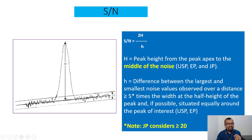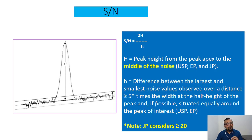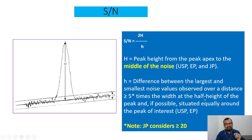If you look at the cursor, you will understand the middle of the baseline. This is the end of the baseline, but this is the middle of the baseline. What is small h? Small h is the difference between the largest and smallest noise values observed over a distance equal to or greater than five times the width at half height of the peak, and if possible situated equally around the peak of interest. USP and EP say equal to or greater than five, and JP talks about equal to or greater than twenty. So small h is the difference between the largest noise and the smallest noise value.